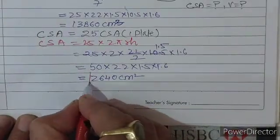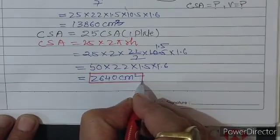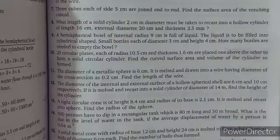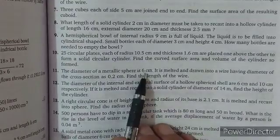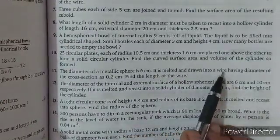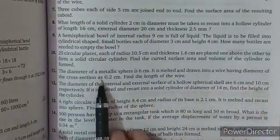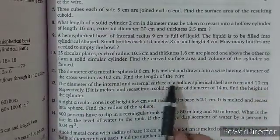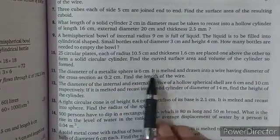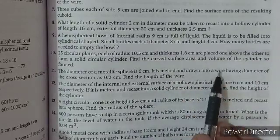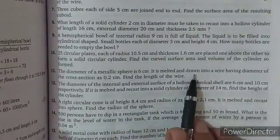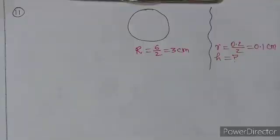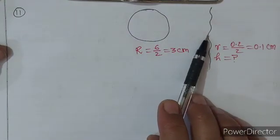इस तरह cylinder का curved surface area भी पता कर लिया। चलिए question number 11 की तरफ बढ़ते हैं। Q11: The diameter of a metallic sphere is 6 cm. It is melted and drawn into a wire having diameter of cross-section 0.2 cm. Find the length of the wire. एक metallic sphere को melt करके wire बनाया गया है।